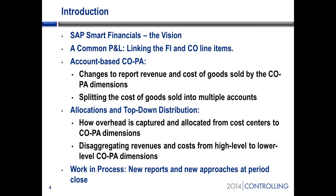You're all experts. You all know that a payroll posting comes into the general ledger, gets converted into a profit and loss account and then to a primary cost element in CO, and gets a cost center attached. But in the past, those were two completely separate documents with a link at the header.